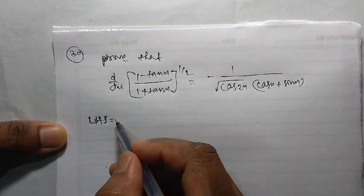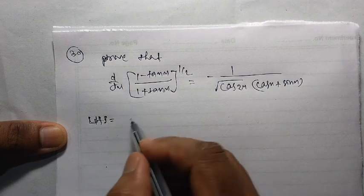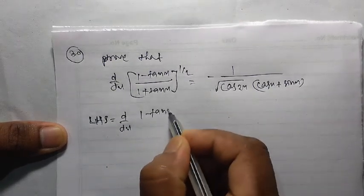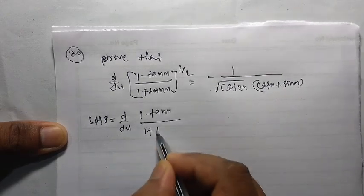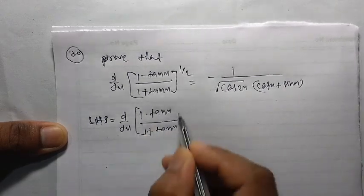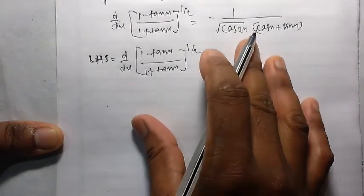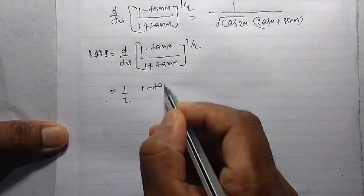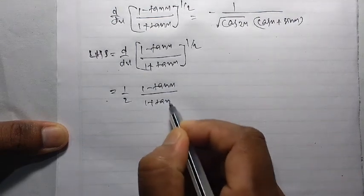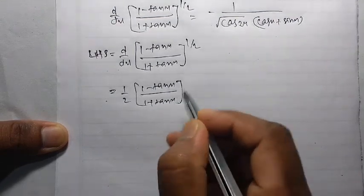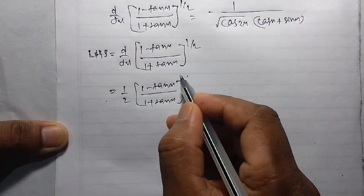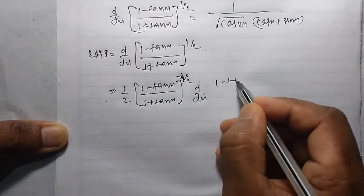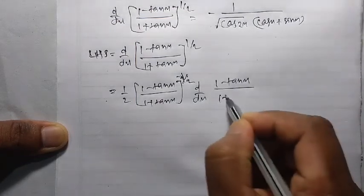If you are new to this channel, please like, share and subscribe. LHS is equal to d by dx of (1 minus tan x) by (1 plus tan x) to the power half. This is equal to half into (1 minus tan x) by (1 plus tan x) to the power half minus one, that is minus half. Again, we take the derivative of (1 minus tan x) by (1 plus tan x).